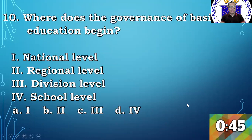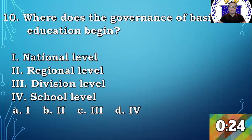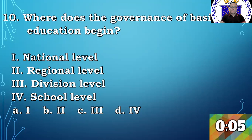Where does the governance of the basic education begin? 1. National level. 2. Regional level. 3. Division level. 4. School level. A1, B2, C3, D4. Your last 30 seconds. You have a lot of time to answer, guys. I hope you get 7 on this MAC test number 2. You can also suggest other topics to be discussed in upcoming videos, although I'm planning to discuss omnibus, frozen leaves, compensation benefits, salaries, and all other stuff related to entitlement. Last 5 seconds. 3, 2, 1, 0.